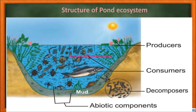By studying the pond ecosystem we can understand the structure and function of an ecosystem. When rainwater gathers in shallow areas it forms a pond. Gradually, over a period of time, different organisms — microbes, plants, and animals — become part of this ecosystem. This pond ecosystem is a self-sustaining and self-regulating ecosystem.